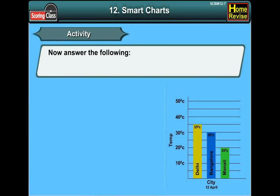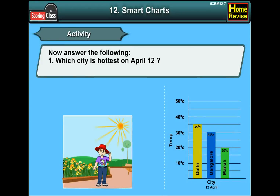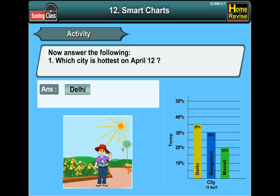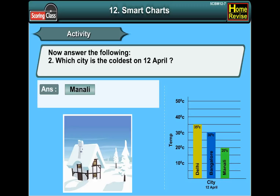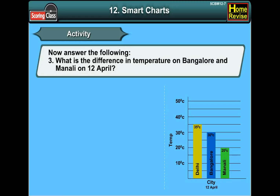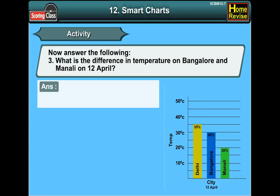Now answer the following. Number 1: Which city is hottest on April 12th? The answer is Delhi. Number 2: Which city is the coldest on 12th April? It is Manali. Number 3: What is the difference in temperatures of Bangalore and Manali on 12th April? The answer is 10 degrees Celsius, as 30 degrees minus 20 degrees equals 10 degrees Celsius.